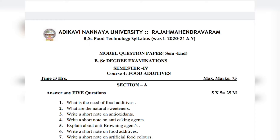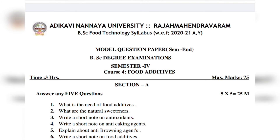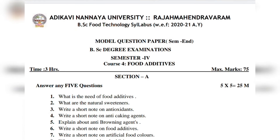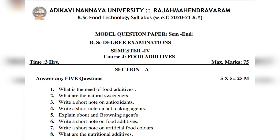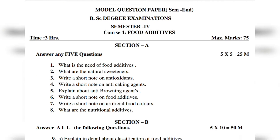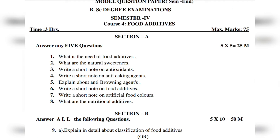First, the short answer questions. Choose from these: What is the need of food additives? What are natural sweeteners? Write a short note on antioxidants. Write a short note on anti-caking agents. Explain about anti-browning agents. Write a short note on food additives. Write a short note on artificial food colors. What are nutritional additives?